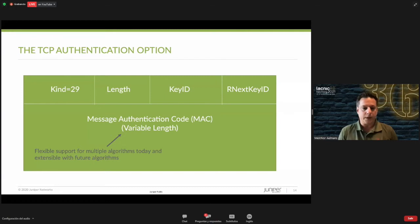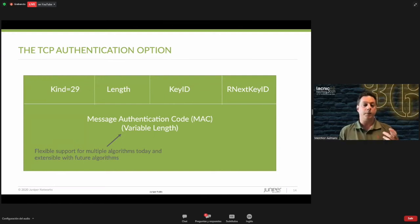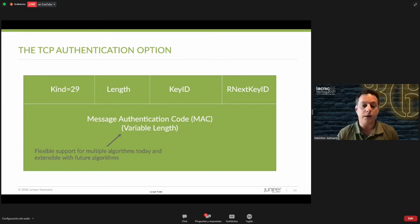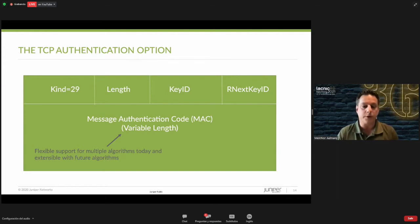Looking at the TCP header, you set option 29, which is registered with IANA — so if you receive a packet with option 29 set, you know it's authenticated using TCP AO. You specify the length, the key ID, and the received next key ID. The MAC is variable length, which allows for multiple or newer authentication algorithms, unlike MD5 where the length is fixed.